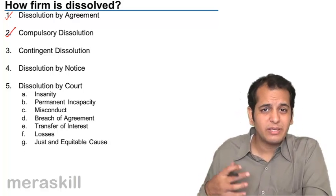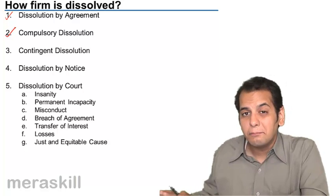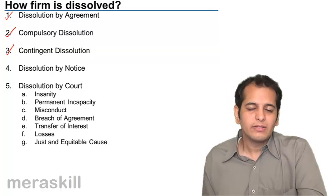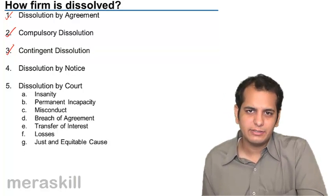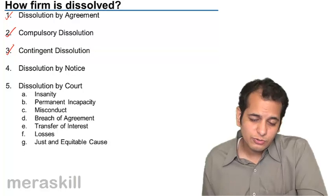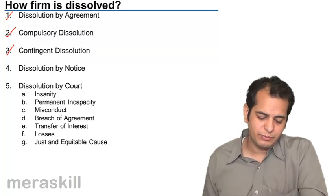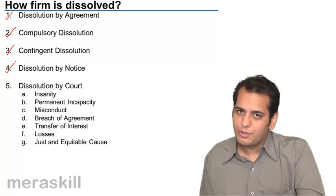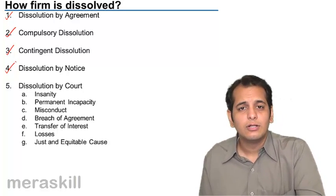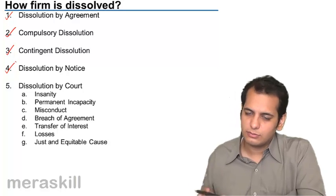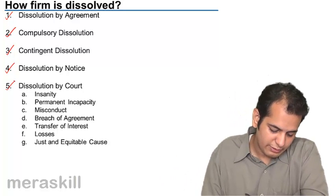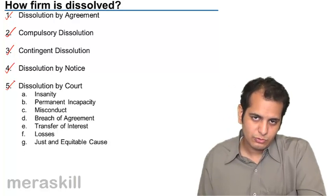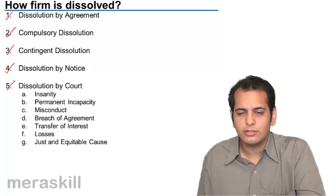Compulsory dissolution - there are some cases in which the firm compulsorily gets dissolved. Contingent dissolution - some contingencies arise because of which the firm has to be dissolved. Dissolution by notice - one of the partners gives notice to other partners for dissolution and the firm gets dissolved.